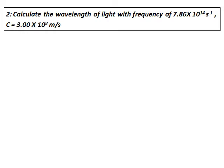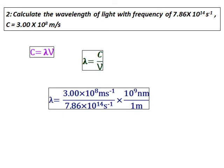Calculate the wavelength of light with a frequency of 7.86 × 10 to the power of 14, and the velocity of light is given. The question is similar to the previous one, so use the same formula. In this case, they have asked for the wavelength and the frequency is given. Therefore, rearrange the equation, substitute all the values, and get the value of wavelength. Wavelength is always reported in nanometers, so convert the unit you get in meters into nanometers and report the value of wavelength.